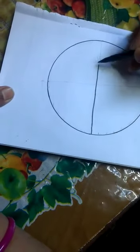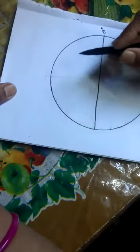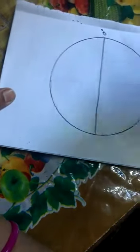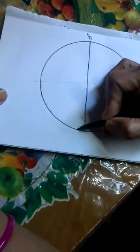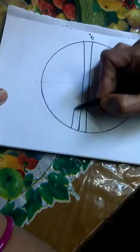Equator is 0 degree latitude. It divides the earth in two parts. This is northern hemisphere, this is southern hemisphere. Then other latitudes pass from earth like this.